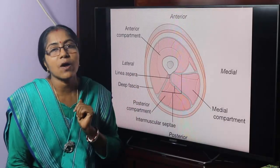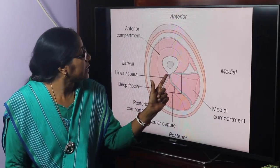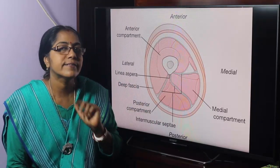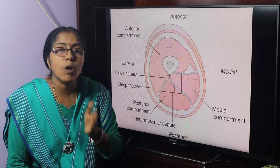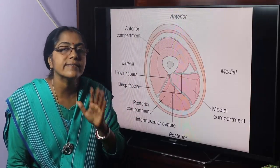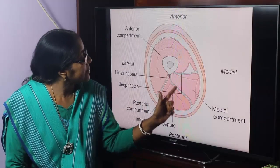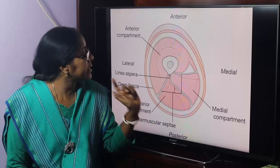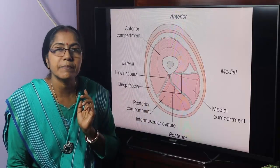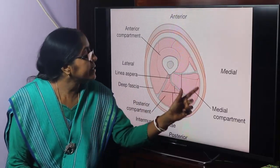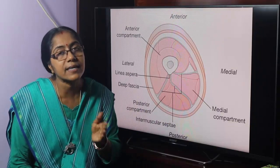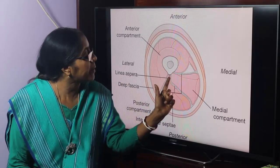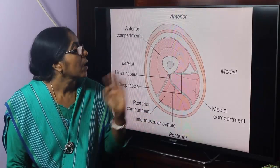The anterior compartment intervenes between the lateral and medial intermuscular septa, and is also termed as the extensor compartment. The posterior compartment intervenes between the posterior and lateral intermuscular septa. The medial compartment, or adductor compartment, intervenes between the medial and posterior intermuscular septa.